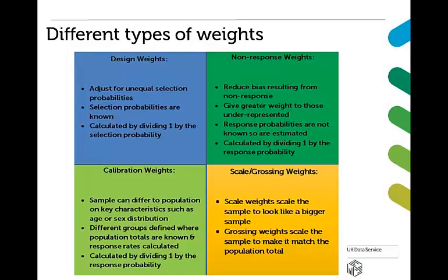The survey weights are typically a combination of several weight adjustments, which aim to compensate for multiple factors, and they allow us to ensure that the sample is representative of the population we're interested in. There are different kinds of weights, including design weights, which are just for the unequal selection probability we introduced earlier in this section. These can also be called probability weights. The selection probabilities are known by the survey team, and therefore the weights can be calculated by dividing one by the selection probability.